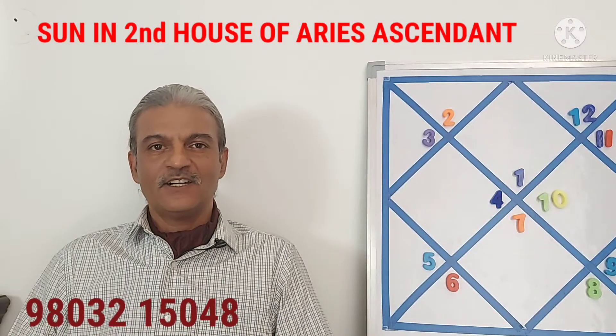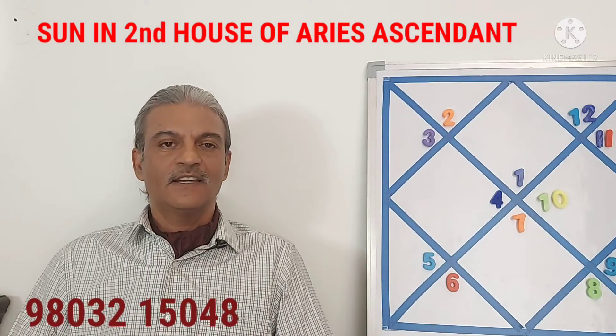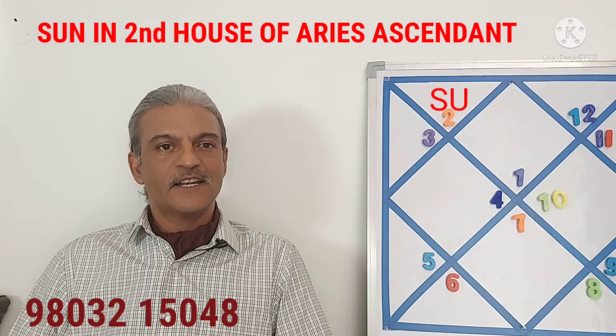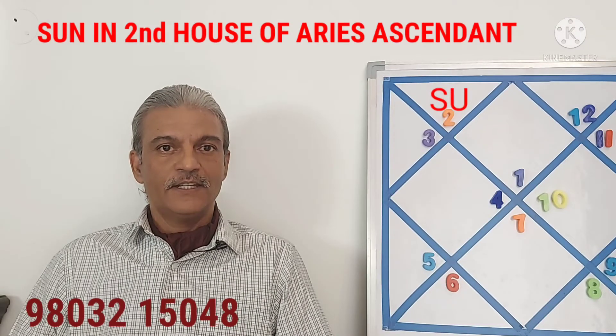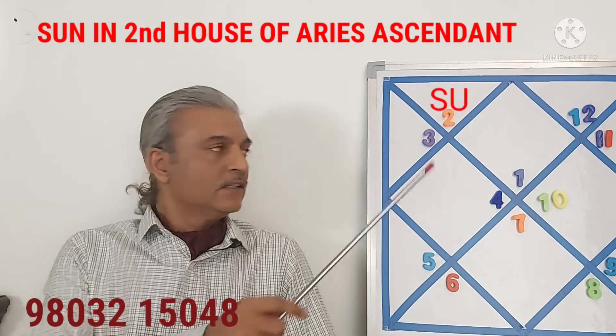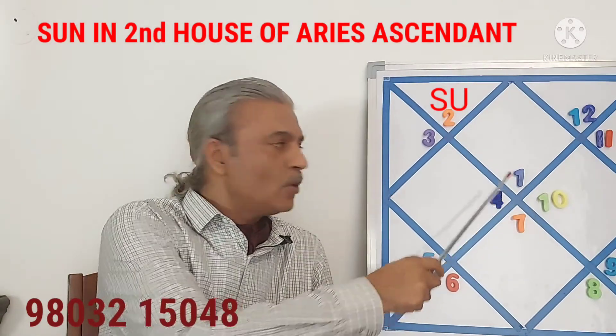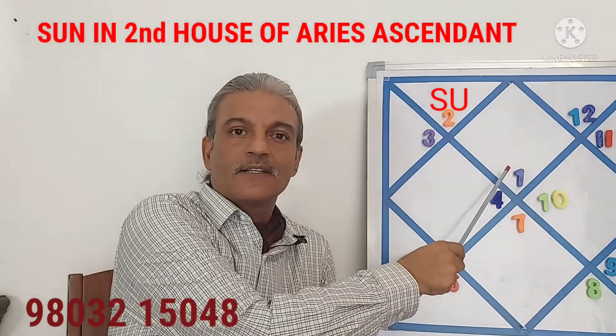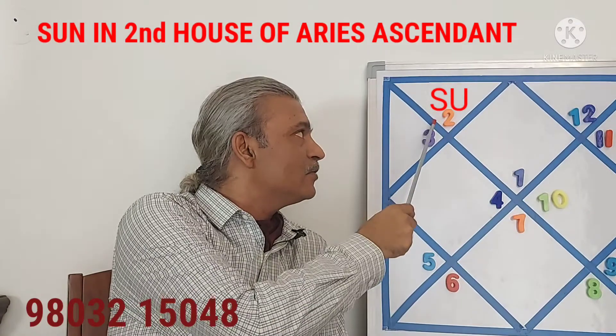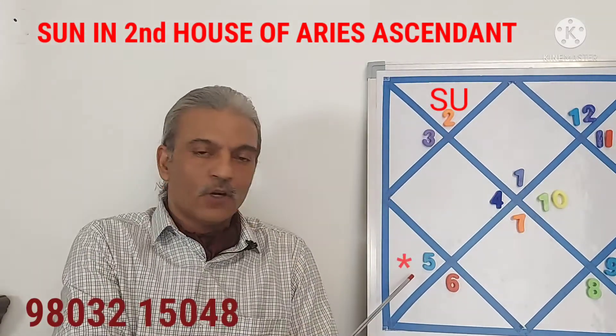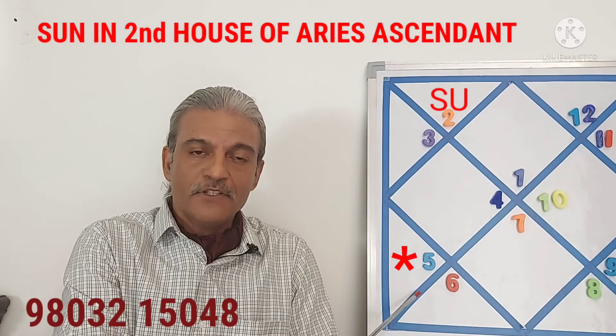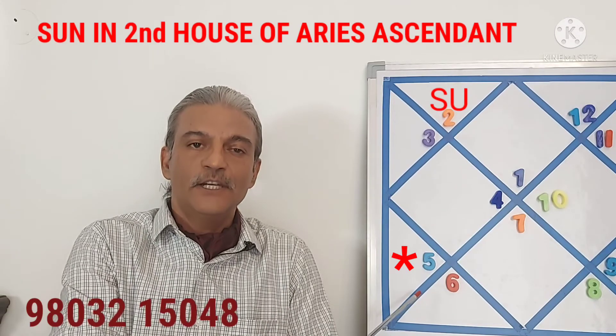Hello friends, let's talk about Sun in the second house in Aries Ascendant. As you can see in the chart placed on my side, this is the Aries Ascendant horoscope because one is written here, the sign Aries, and Sun is placed in the second house. Sun is the lord of the fifth house where number five is written, which is the sign of Leo.